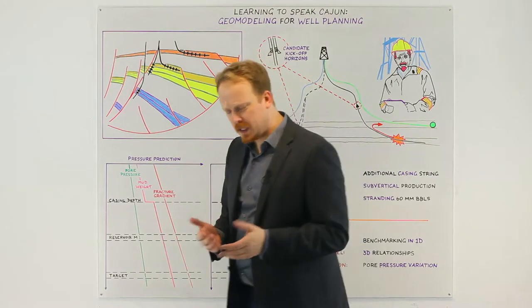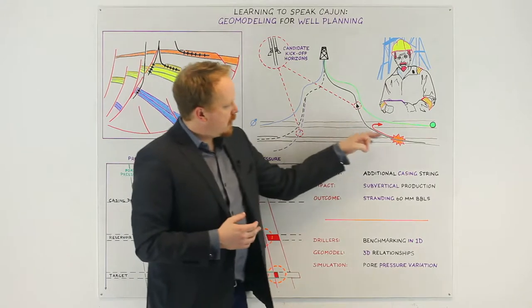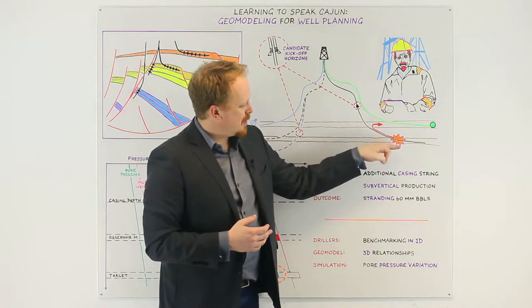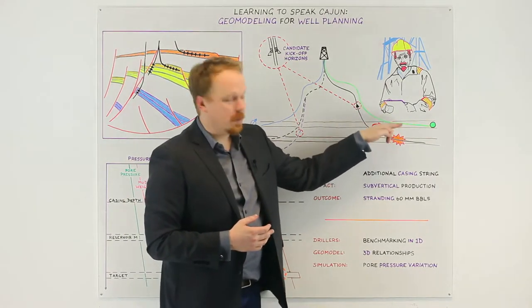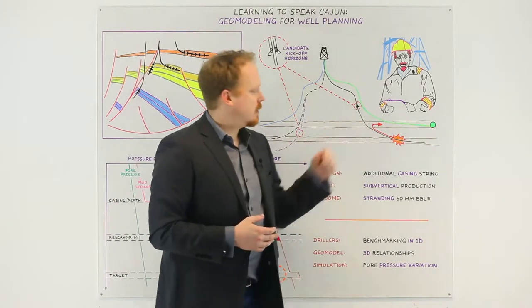When we drilled it however we encountered a problem and the problem was this. We had been above that target, not beneath, above that target the biggest producer of that shallower reservoir and so it had been causing a lot of pressure depreciation locally in that area.